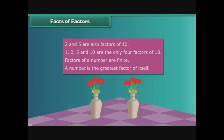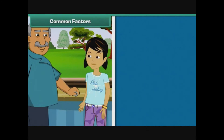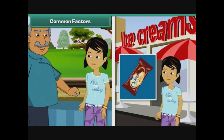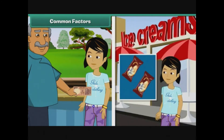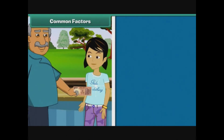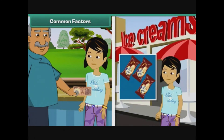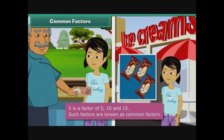A number is the greatest factor of itself. Common factors. Prena's grandfather gives Prena five rupees for ice cream. She buys her favorite orange bar for five rupees, expressed as one multiplied by five equals five. A week later he gives her ten rupees, and she buys two orange bars: two multiplied by five equals ten. The next week she gets fifteen rupees and buys three orange bars: three multiplied by five equals fifteen. It is clear that five is a factor of five, ten and fifteen. Such factors are known as common factors.